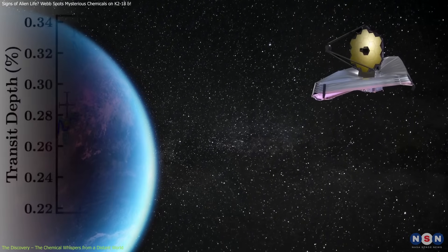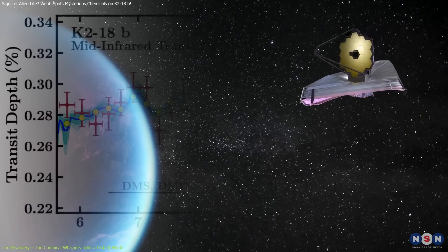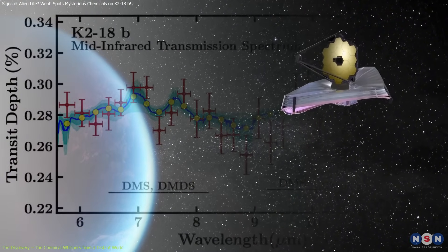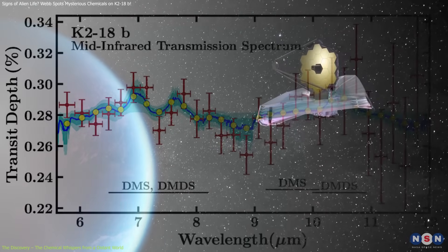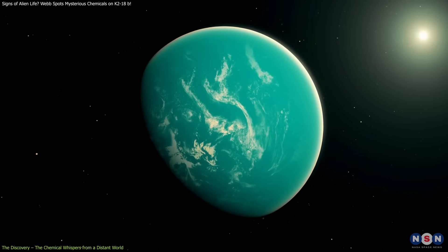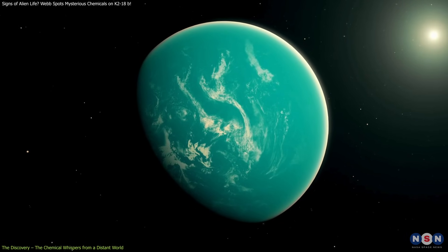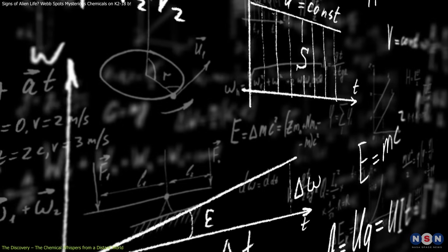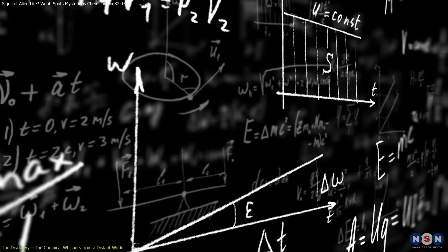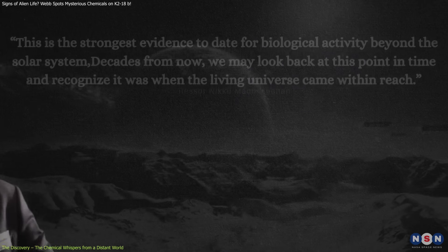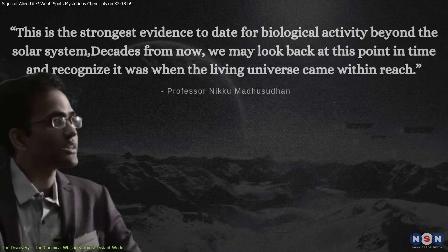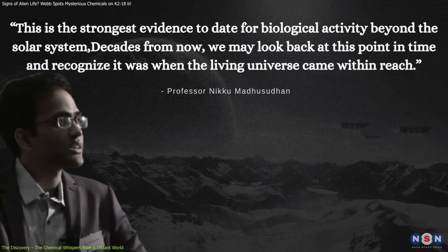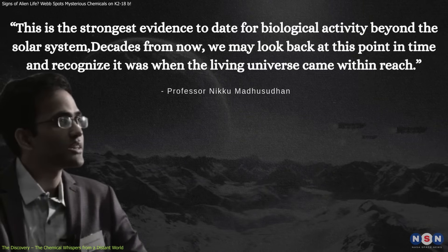The detection reached 3-sigma statistical confidence, meaning there's only a 0.3% chance that the signal is a fluke. While this is robust by astronomy standards, it's still below the 5-sigma threshold often used in physics to confirm discoveries with high certainty. This is the strongest evidence to date for biological activity beyond the solar system, said Professor Madhusudan.